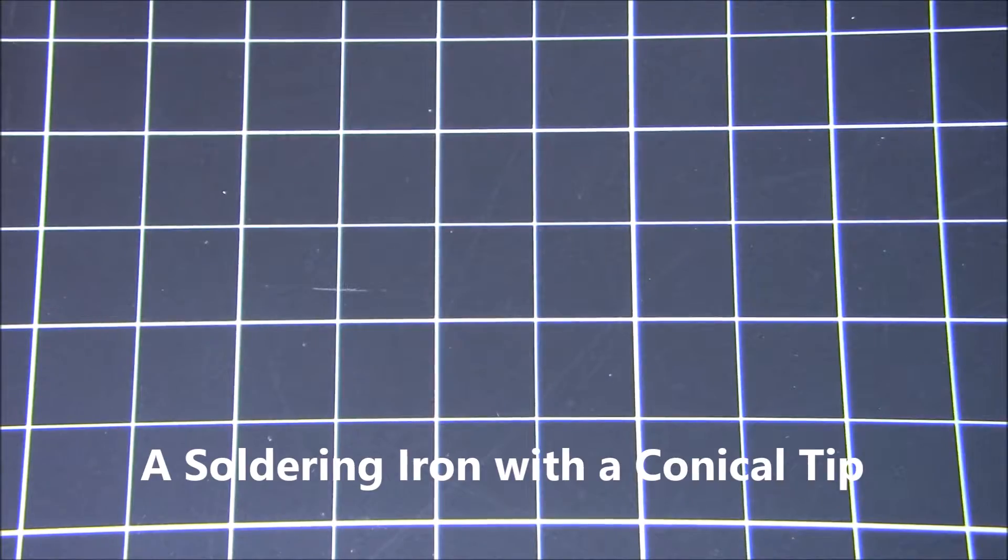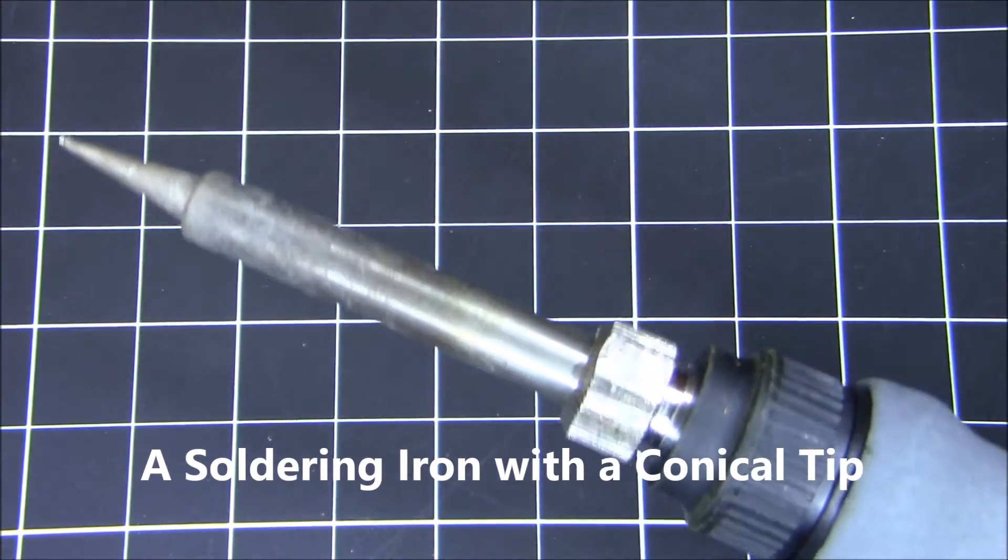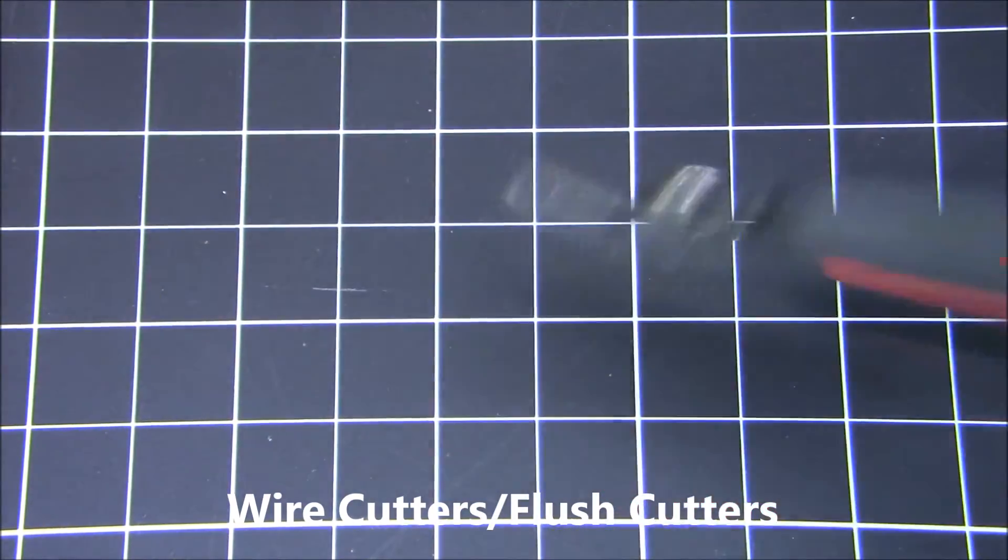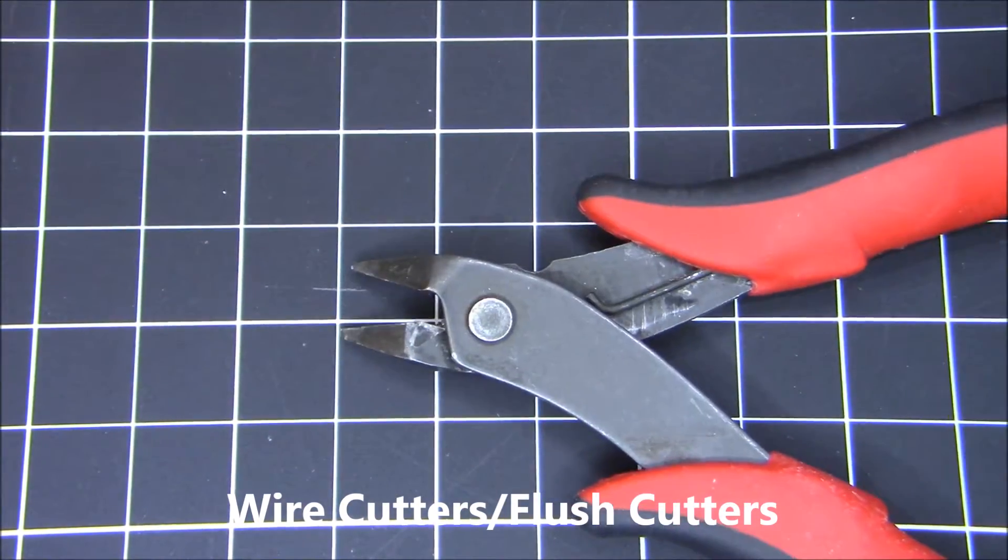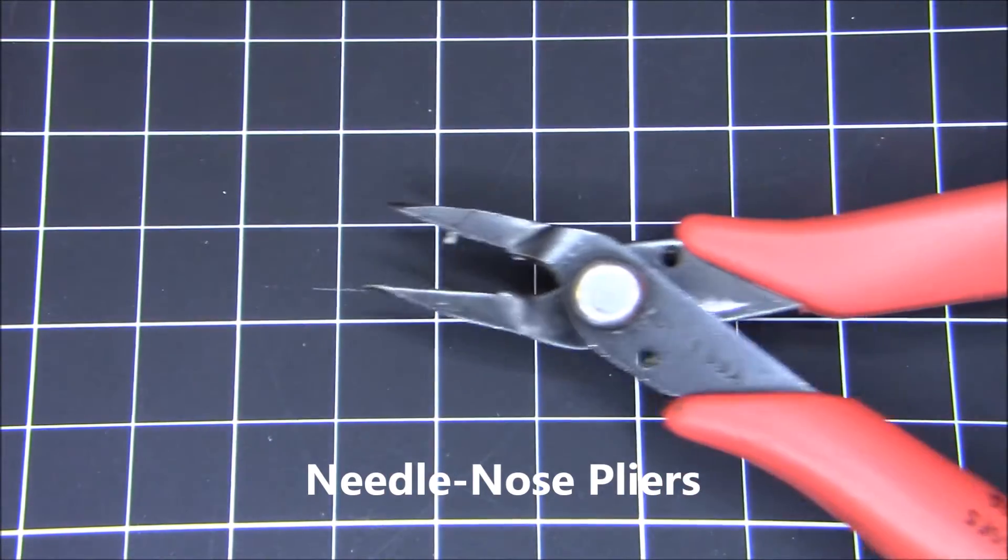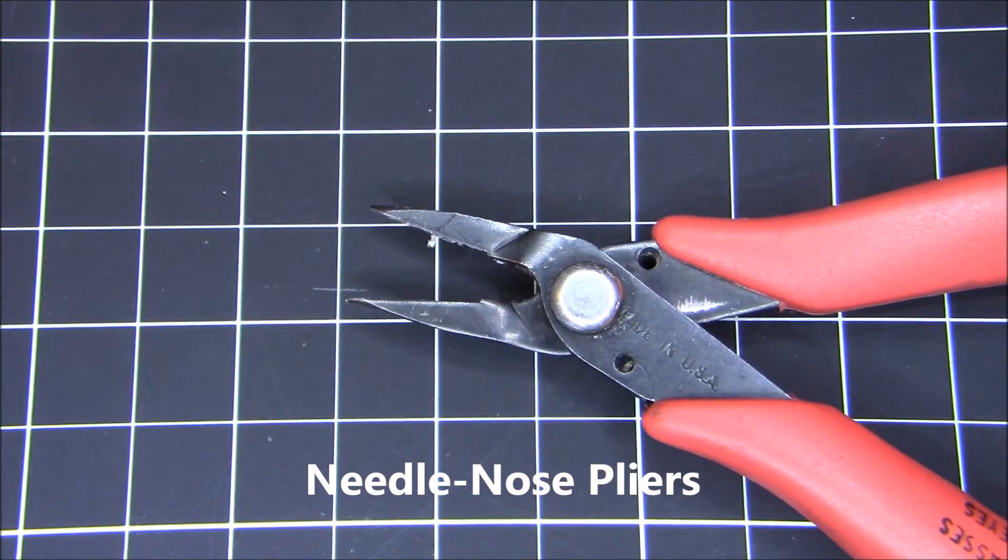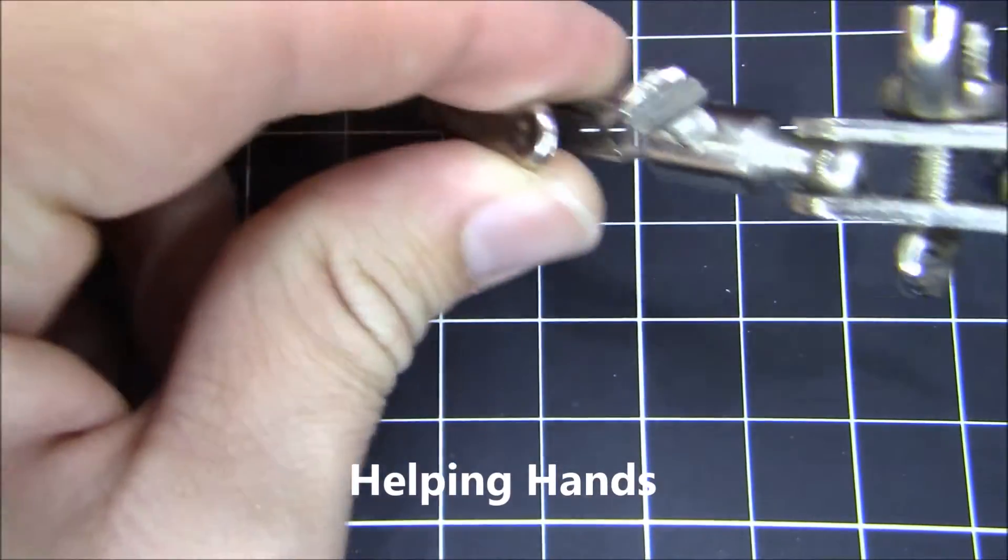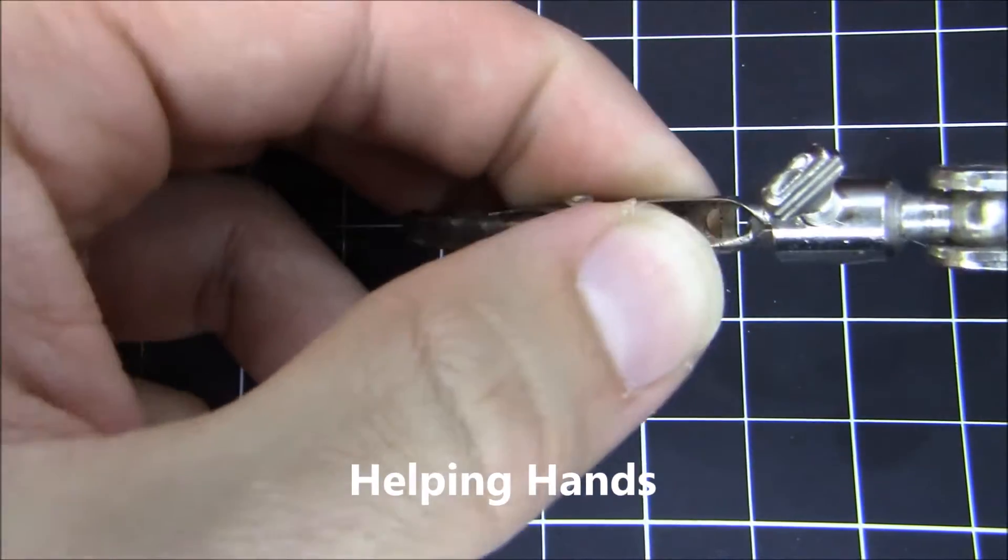You need a couple tools to assemble this kit. The first tool you need is a soldering iron with a conical tip. Pretty much any soldering iron will work. You need wire cutters or flush cutters to trim the leads of components. You need needle nose pliers to bend a couple things into place. You need helping hands to hold the PCB while you're soldering to it.